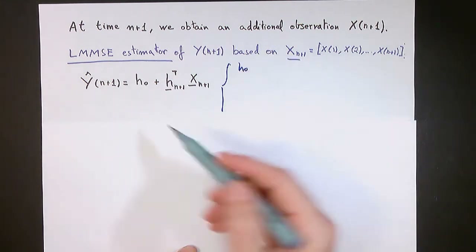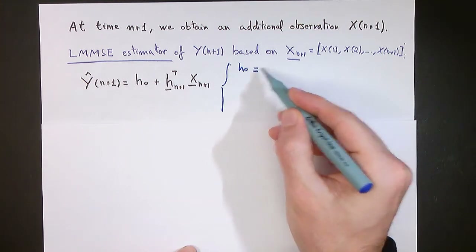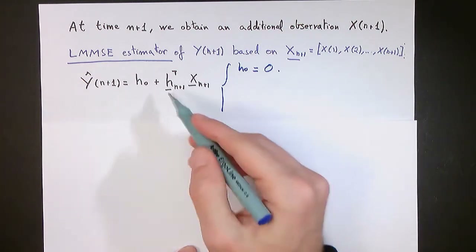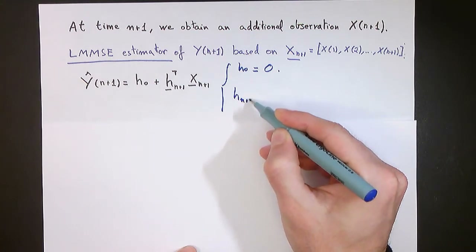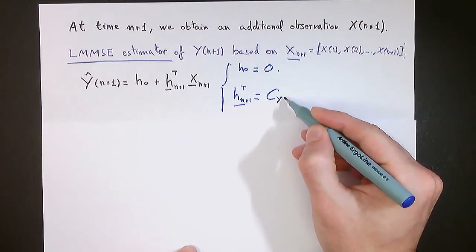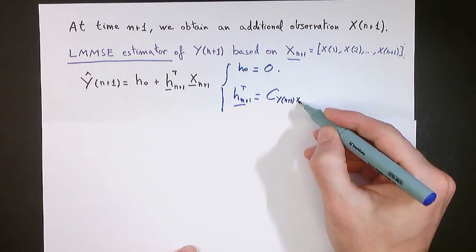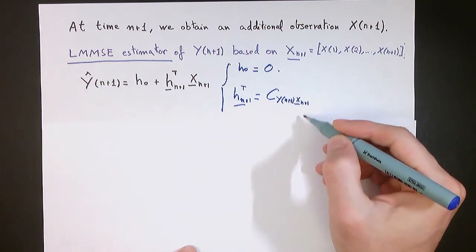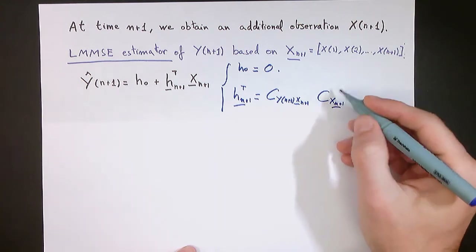The offset coefficient h_0, because as before both processes y and x are zero mean, is equal to zero. And the new vector of coefficients h_{n+1} will similarly be obtained from the covariance of the n plus 1 sample of y with the vector of observations, which this time has one more observation, and the inverse of the covariance matrix of the new vector of observations.